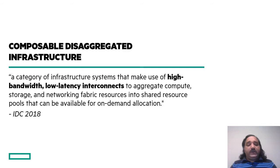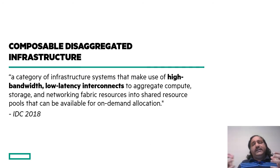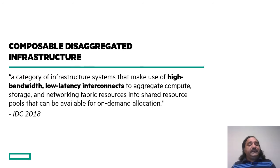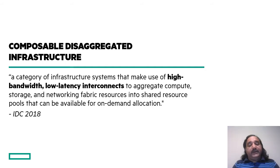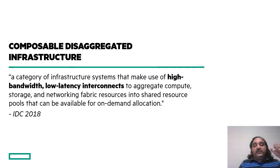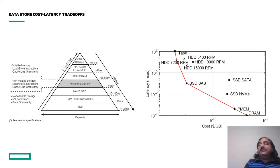Another important trend in distributed computing is composable disaggregated infrastructure, where IDC defines it as a category of infrastructure systems that use high-bandwidth, low-latency interconnects to aggregate compute, storage, and network fabric resources into a shared resource pool that can be allocated on demand. Think of this as disaggregating hosts into resource pools of storage, compute, and networking, then combining them together as required.